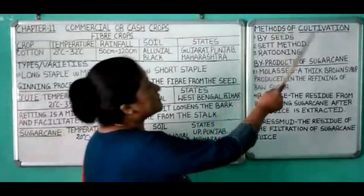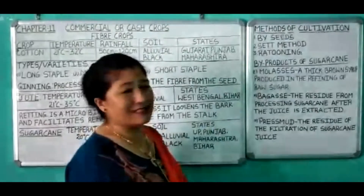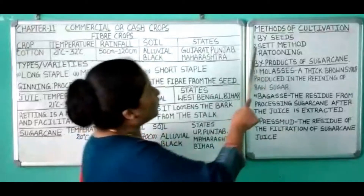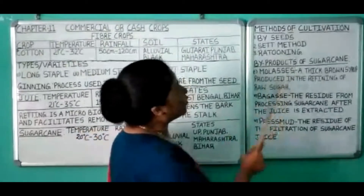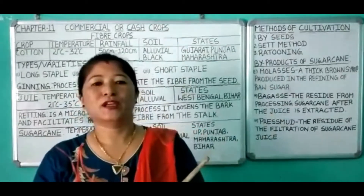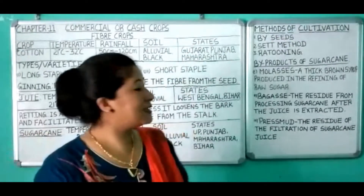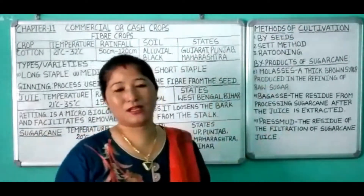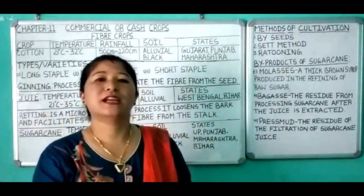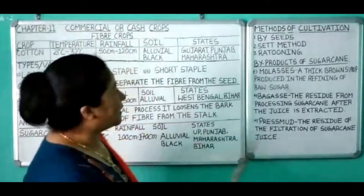Now let us see the methods of cultivation. The first method is propagation by seed, which is a simple method of sowing seeds. The second is the set method. Since sugarcane belongs to the bamboo family, it has several joints. In the set method, the sugarcane is cut into several joints, a set is prepared from a healthy plant, and then it is grown.